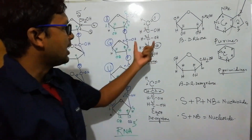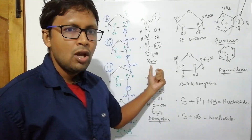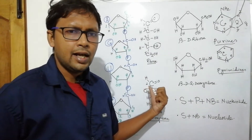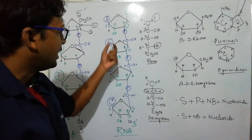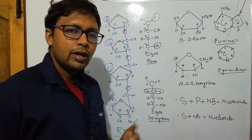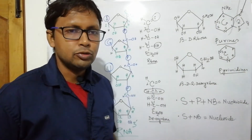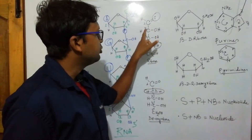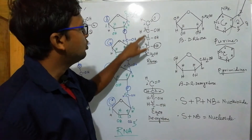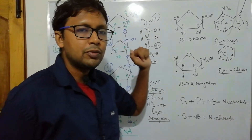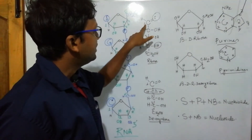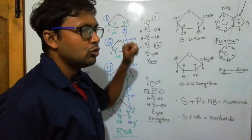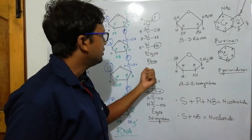This is a linear structure of ribose sugar. It is a pentose sugar. I am discussing sugar in the context of DNA and RNA because ribose is one of the most important structural components. The ribose sugar has five carbons, numbered one through five. The first carbon has a double bond oxygen and hydrogen — that is a CHO aldehyde group. So ribose is an aldehyde sugar, not a ketose sugar.